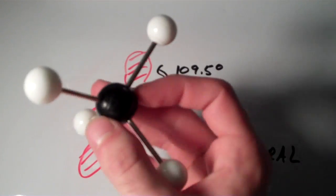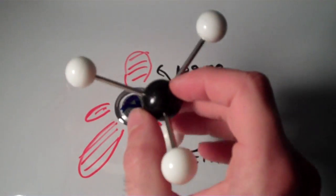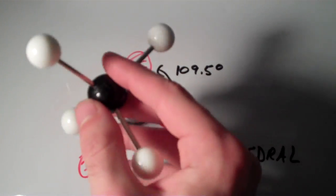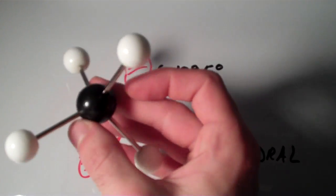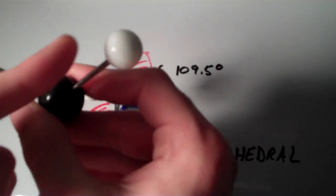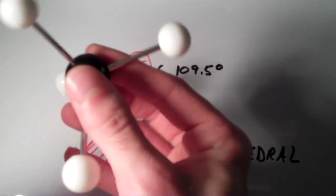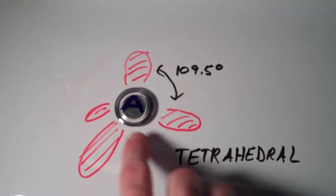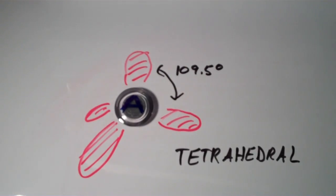Notice that all of the white atoms that are bonded to the black atom, they're all the same distance and angle apart from one another. So, that means that this angle is 109.5 degrees, so is this angle, and so is this angle, and so is this angle, and so forth.